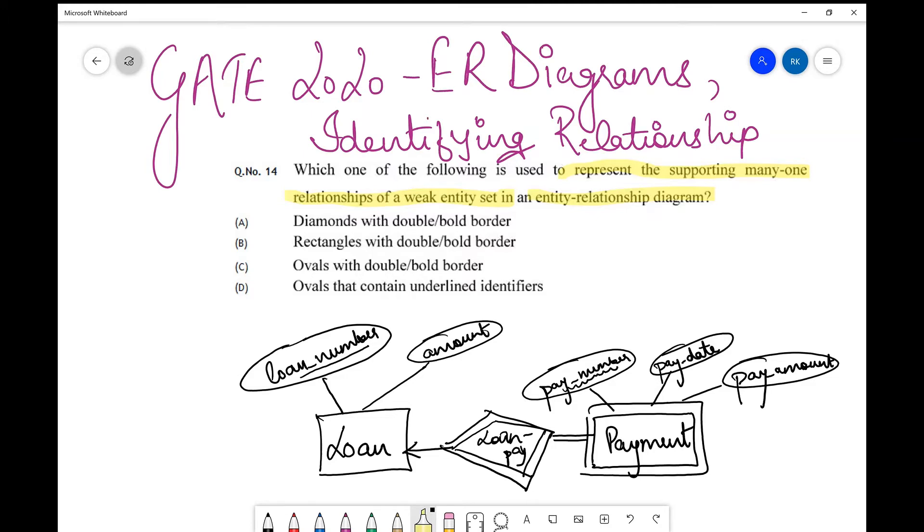I had already discussed that for a weak entity set, which has no independent existence, it always needs to get associated with a strong entity set. When it links with a strong entity set using a relationship, that relationship is known as the identifying relationship.